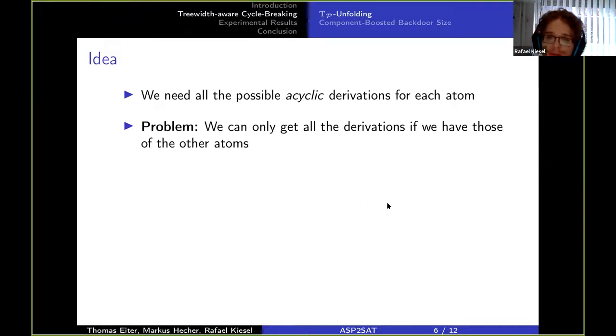Namely, actually what we want to have is all possible acyclic derivations for each atom. And so one, let's say, okay, so if you have the rules then you can get the derivations.